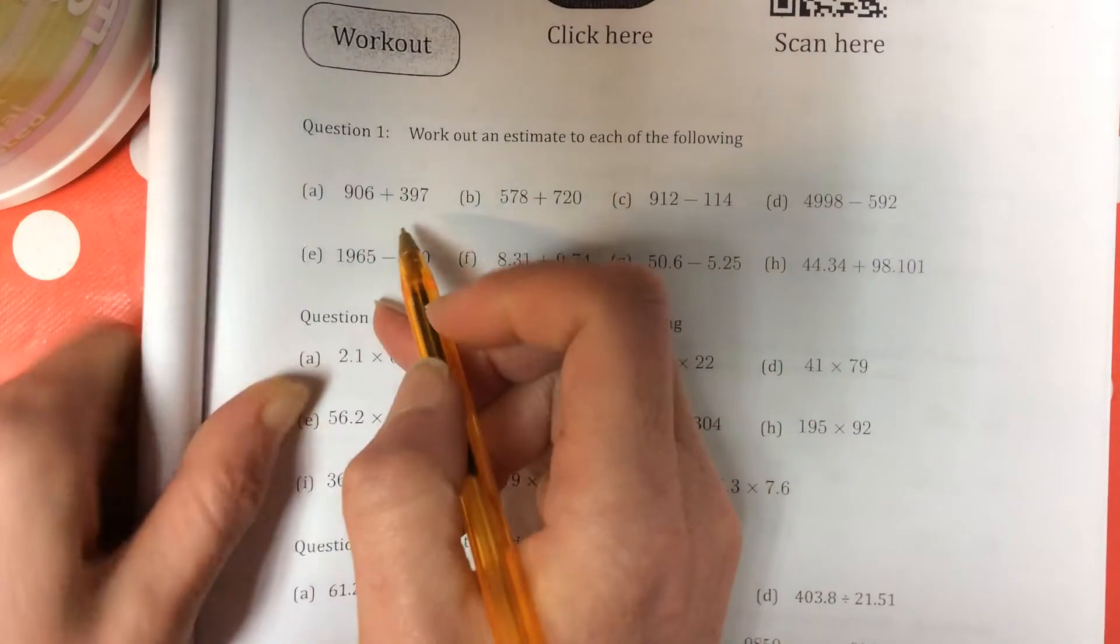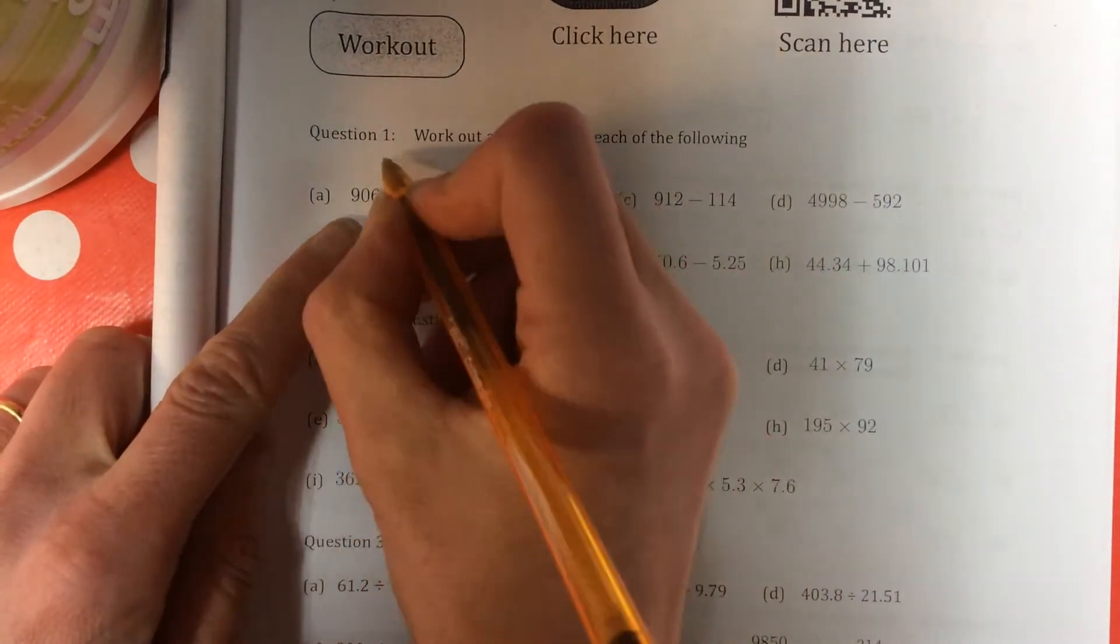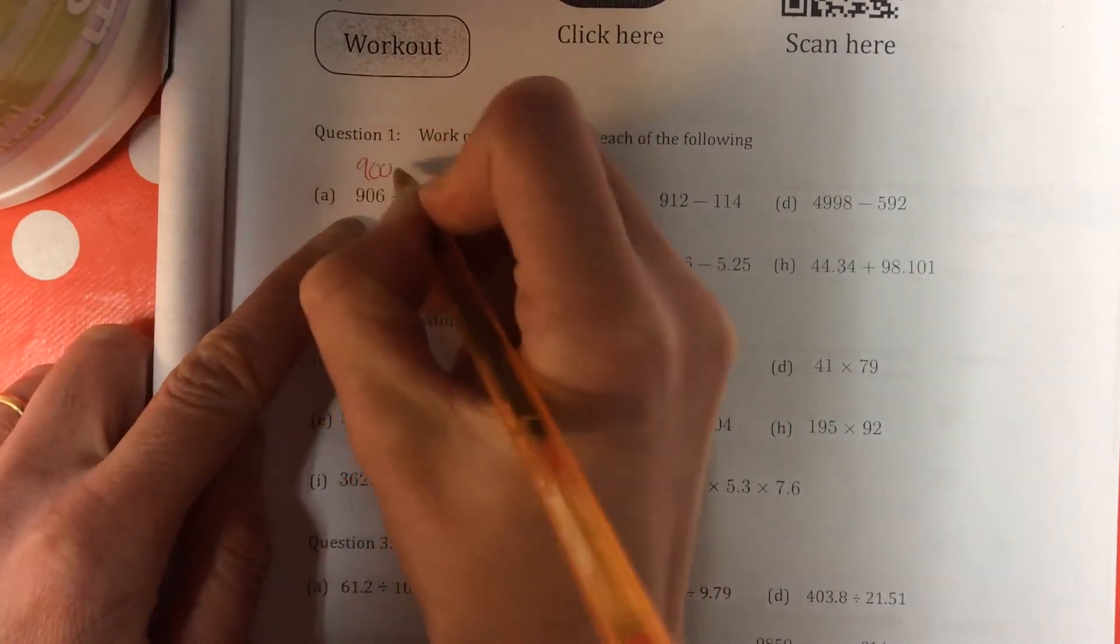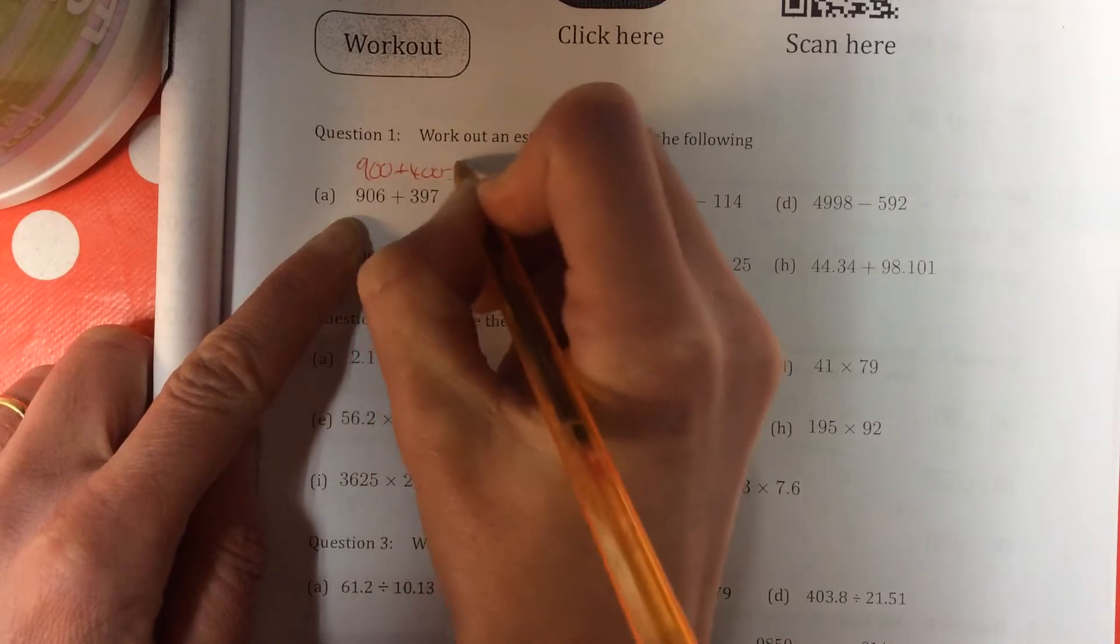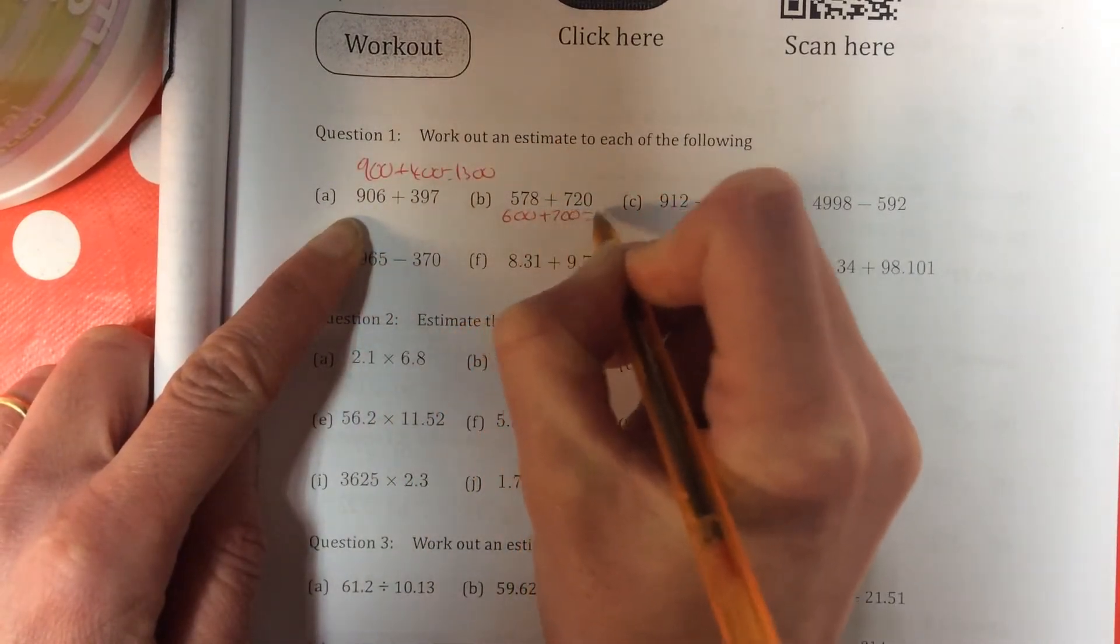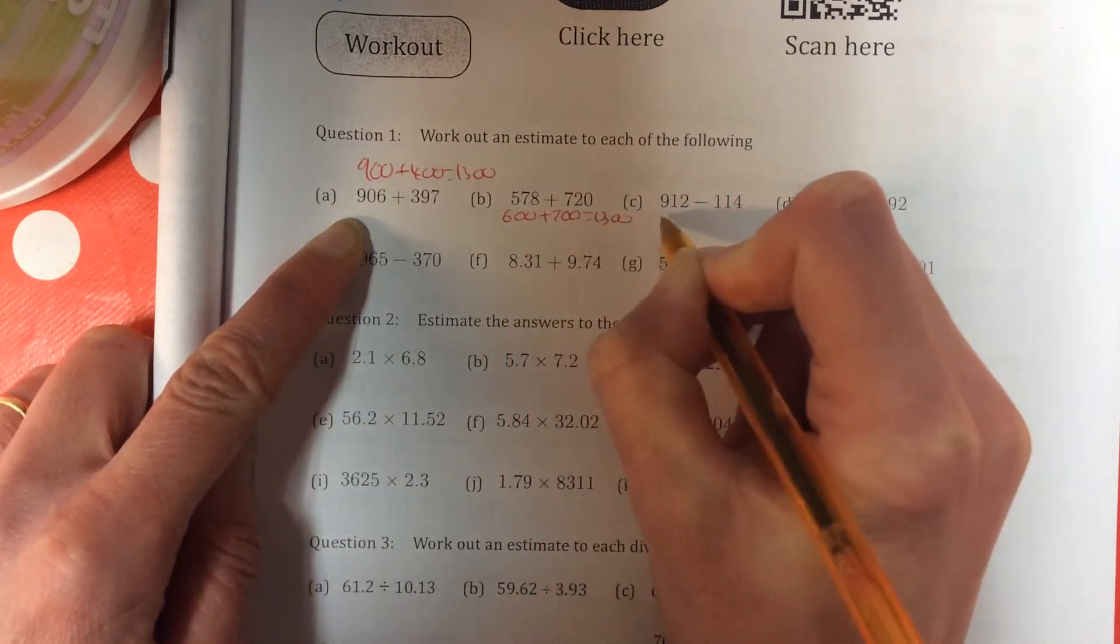Okay, when we're doing the estimation, you want to round it to about one significant figure. So that one there rounds to 900 plus 400, and then you just work it out. So this one here would be 600 plus 700, and then you work it out. So it should be quite straightforward.